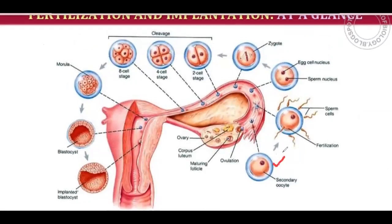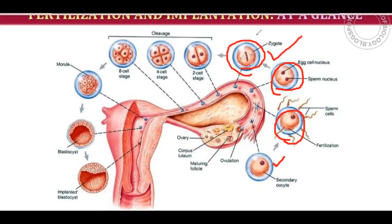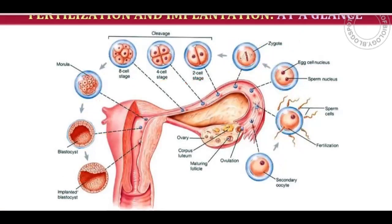The secondary oocyte is fertilized by sperm, forming a zygote. The zygote divides into 2-cell, 4-cell, and 8-cell stages and then becomes a morula. When it is a morula, it enters the uterine cavity, and the implanted blastocyst forms thereafter.